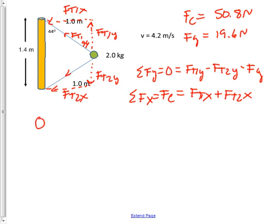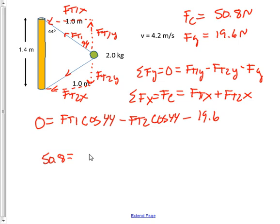So for the y equation, we have 0 equals force tension 1 multiplied by the cosine of 44 minus force tension 2 multiplied by the cosine of 44, minus the force of gravity, and that's 19.6. In the x direction, we have force centripetal is the sum of the forces in the x direction. That's 50.8, and that's going to equal force tension 1 times the sine of 44 plus force tension 2 times the sine of 44.